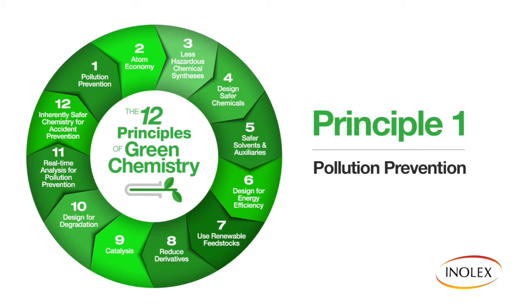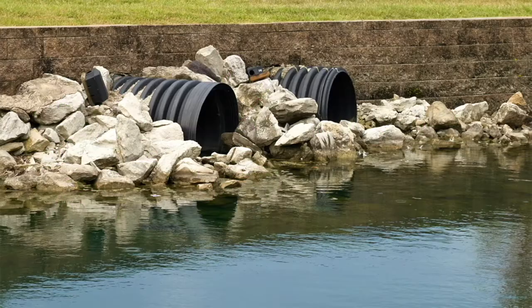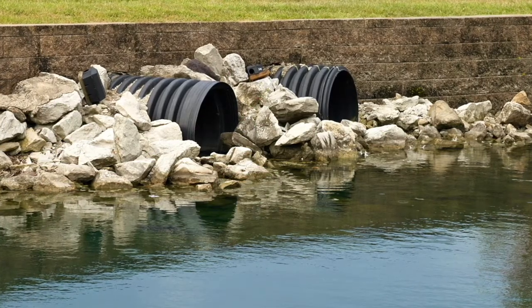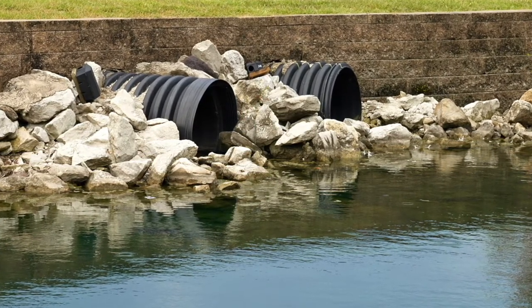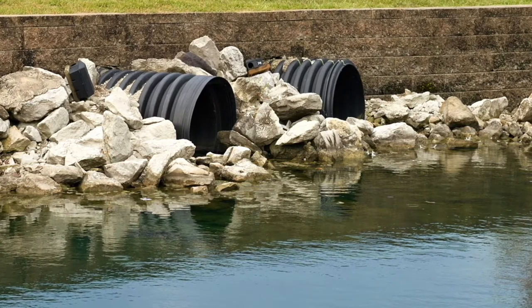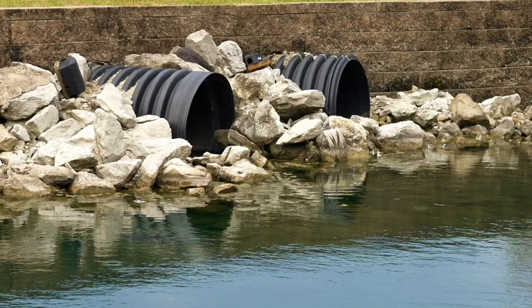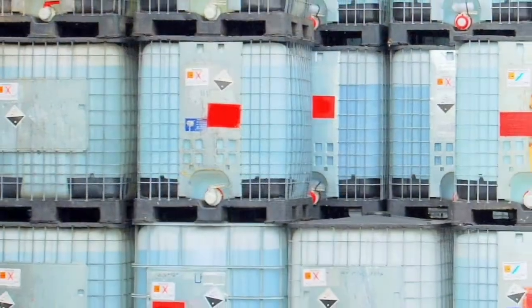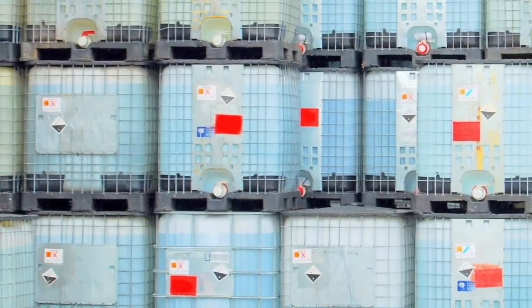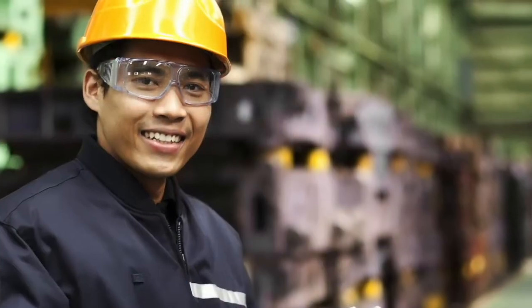One, we have pollution prevention. Some examples of that are not, of course, dumping any chemical byproducts into streams, or allowing materials to escape from the process vessels into the air. We want to do as much as possible in terms of preventing any chemical species from exiting the space where the material is being produced.